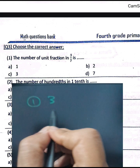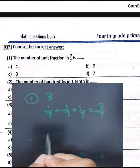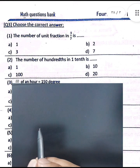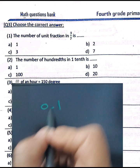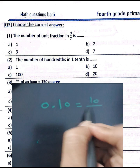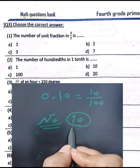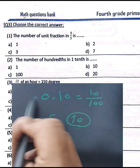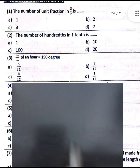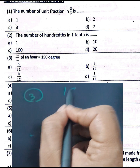Example number one: the number of unit fractions in one over seven plus one over seven plus one over seven equals three over seven, so the number of unit fractions is three. The number of hundredths in a number: ten over one hundred equals one tenth, so the result is ten hundredths — the answer is ten.